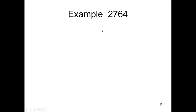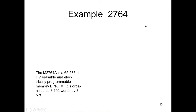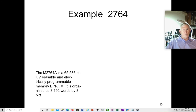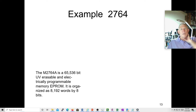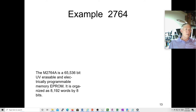Let's look at a 2764 — a very classic ROM. It was UV erasable and electrically programmable, called an EPROM, organized as 8K words by 8 bits. This was frequently used as the initial code to get a motherboard with an Intel or AMD chip up and running. The first thing it does is start executing instructions, which is enough to get a disk drive to read a boot track into dynamic RAM on a desktop or laptop.